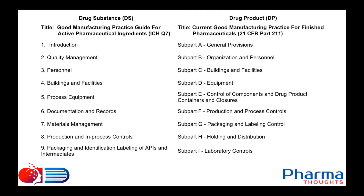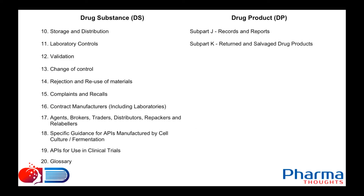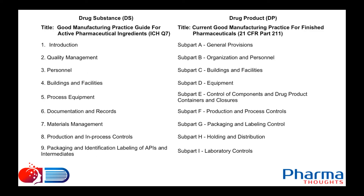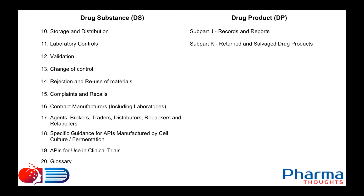For manufacturing the final drug product, we have 21 CFR Part 211, which is divided into subparts A through K — 11 sections that describe the GMP requirements for a drug product. They cover: general provisions, organization and personnel, buildings and facilities, equipment, control of components and drug product containers and closures, production and process controls, packaging and labeling control, holding and distribution, laboratory controls, records and reports, and returned and salvage drug products.